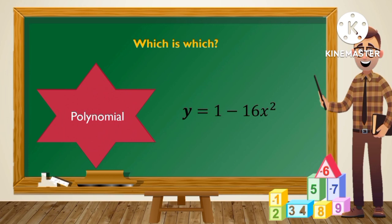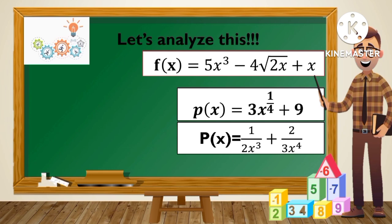Let us analyze why a function is not a polynomial. Please take a look. Number 1: f of x is equal to 5x cubed minus 4 square root of 2x plus x. It is not a polynomial function since a variable is inside a radical sign. As you can see, x is inside a radical.